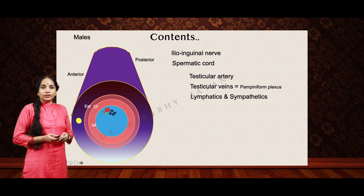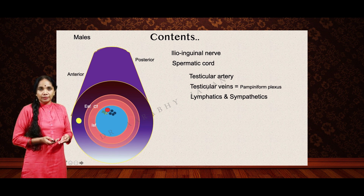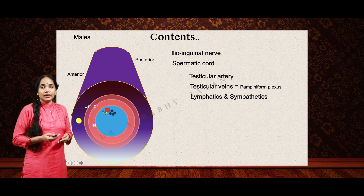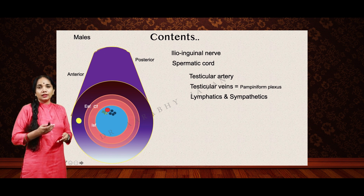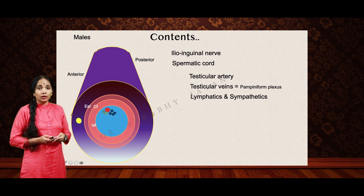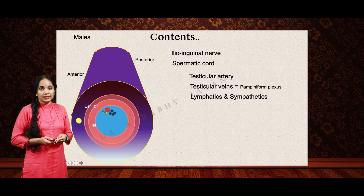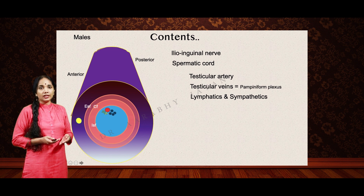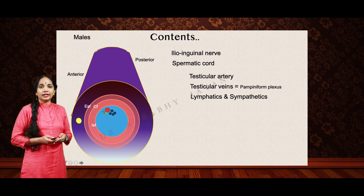The testicular artery, veins which form the pampiniform complex, lymphatics, and sympathetics are one of the major contents. The ilioinguinal nerve is actually outside the spermatic cord, lying on the anterior wall. It penetrates between the internal oblique and the external oblique to reach the inguinal canal and passes out through the superficial inguinal ring, so you cannot call it a content of the spermatic cord. The contents are the testicular vessels, lymphatics, and sympathetics coming and going from the testes.